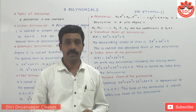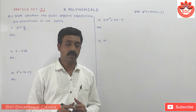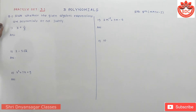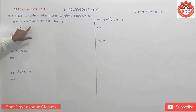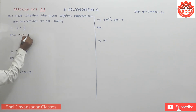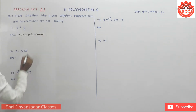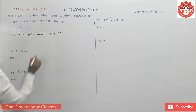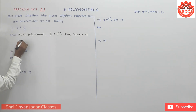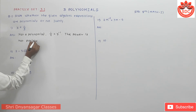Let's take Practice Set 3.1. Question 1: State whether the given algebraic expressions are polynomials or not, and justify your answer. An algebraic expression is a polynomial if the power is a positive integer. First: y + 1/y — here 1/y is y⁻¹, so the power is not a positive integer. Therefore this expression is not a polynomial.